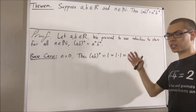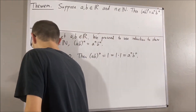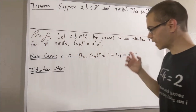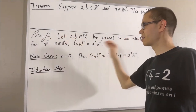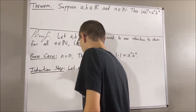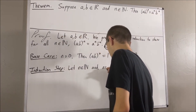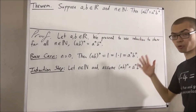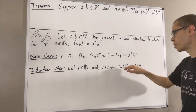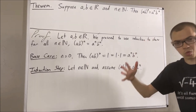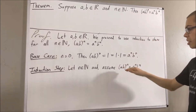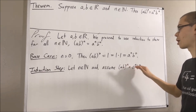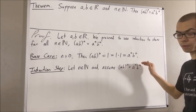Now let's move on to the induction step. In the induction step, we give ourselves an arbitrary natural number n where this is true. The whole goal of the induction step is to show that this is also true for n plus 1. That is, we want to show that AB to the power of n plus 1 is equal to A to the power of n plus 1 times B to the power of n plus 1.